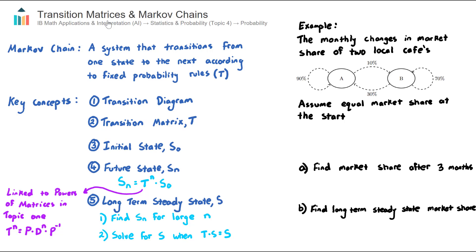In this video, we look at transition matrices and Markov chains, which are part of the AIHL only course in Topic 4, Statistics and Probability, under the subtopic of probability. There are five key concepts that we need to work through in this video, and I'm going to use this example here on the right-hand side to explain each of these five. But before we do, let's firstly define what a Markov chain is. A Markov chain is a system that transitions from one state to the next according to fixed probability rules, and those rules are defined by the transition matrix T.